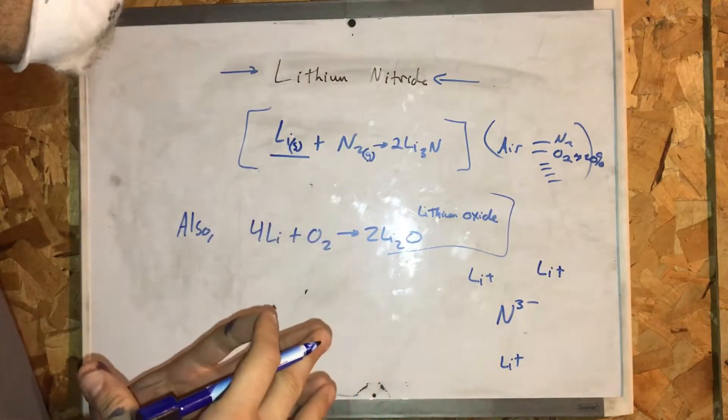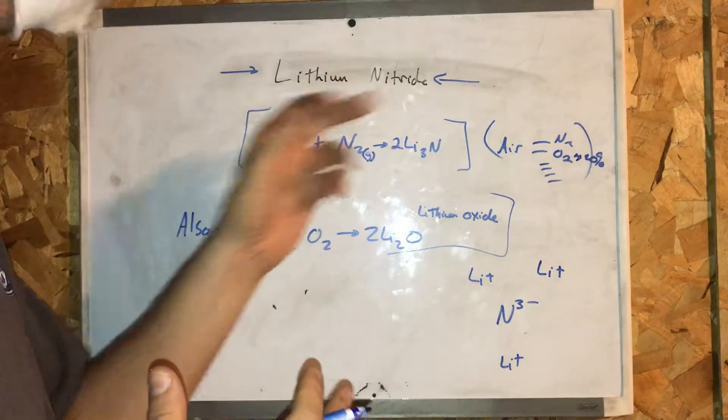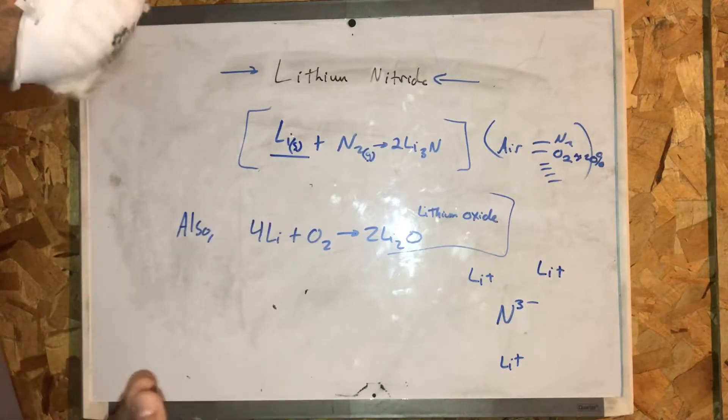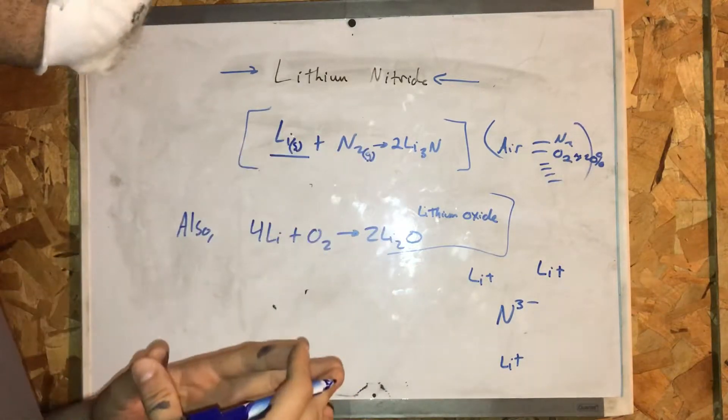So in this process, we're going to create a very relatively high yield of lithium nitride. Now, in the process, knowing that I burn elemental lithium to create lithium nitride,